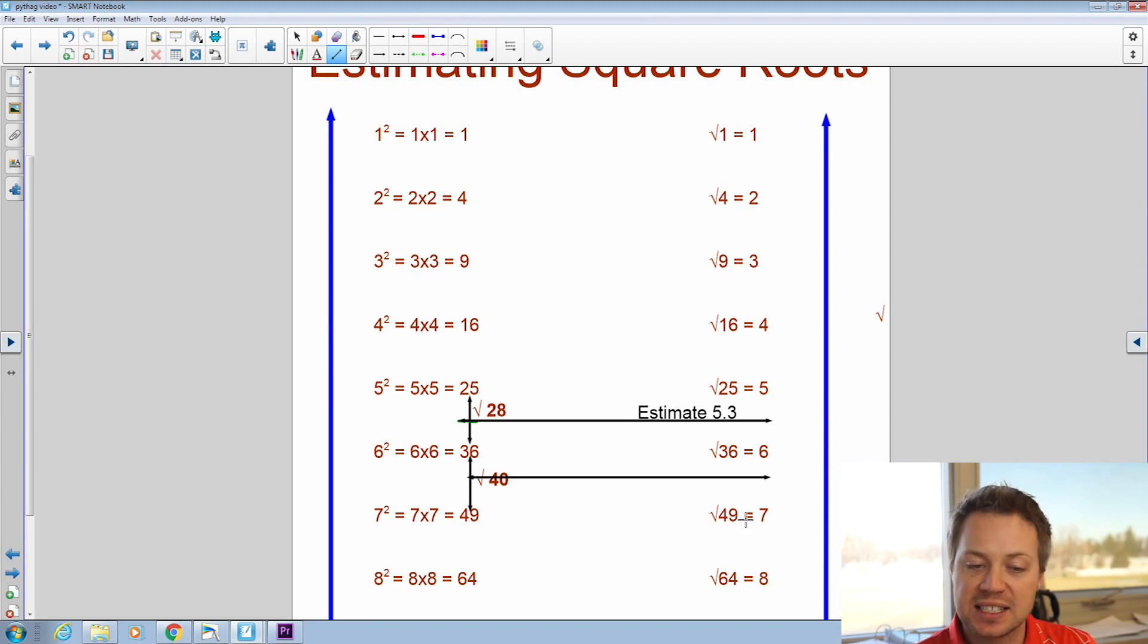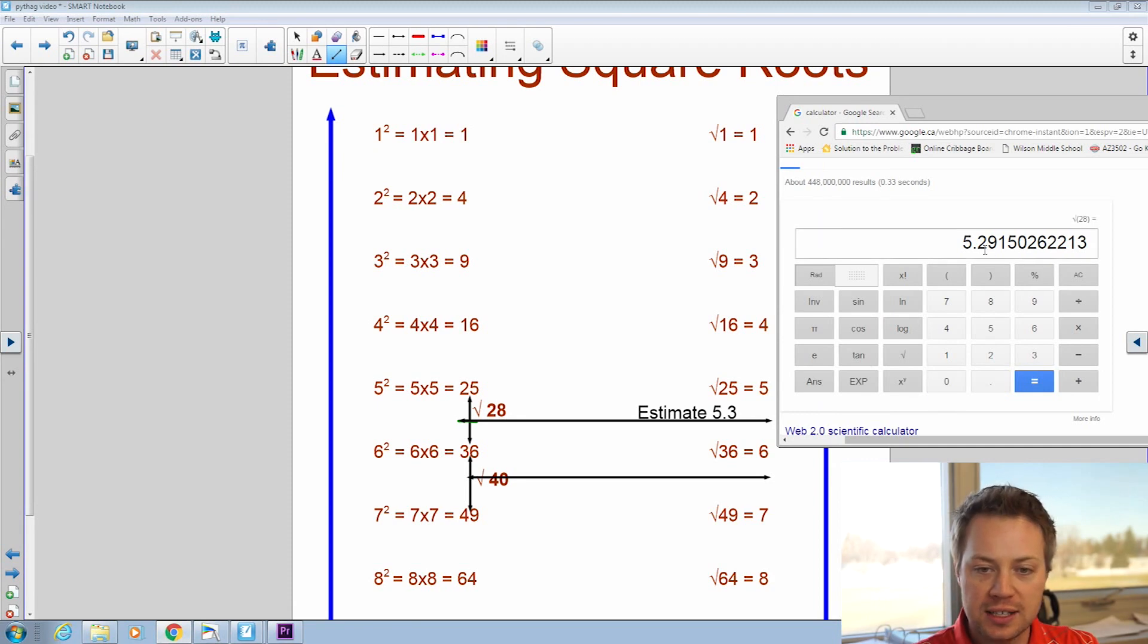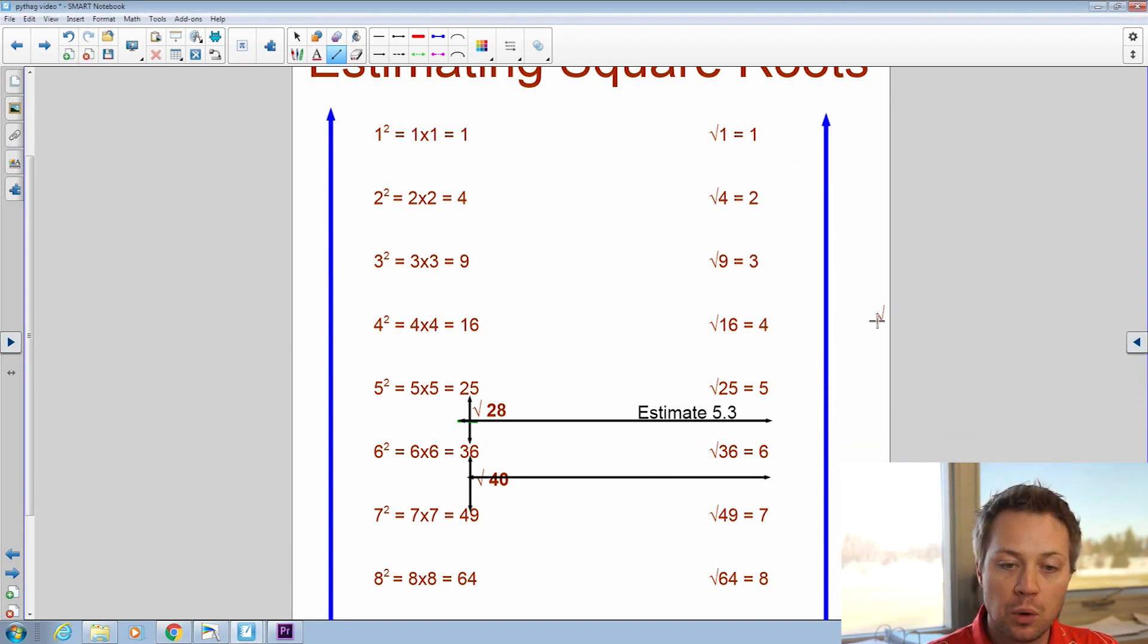So let's go ahead and check this. If I go square root 40 equals, and I get 6.32. So again, my estimate of 6.3 was pretty close. Let's try one more.